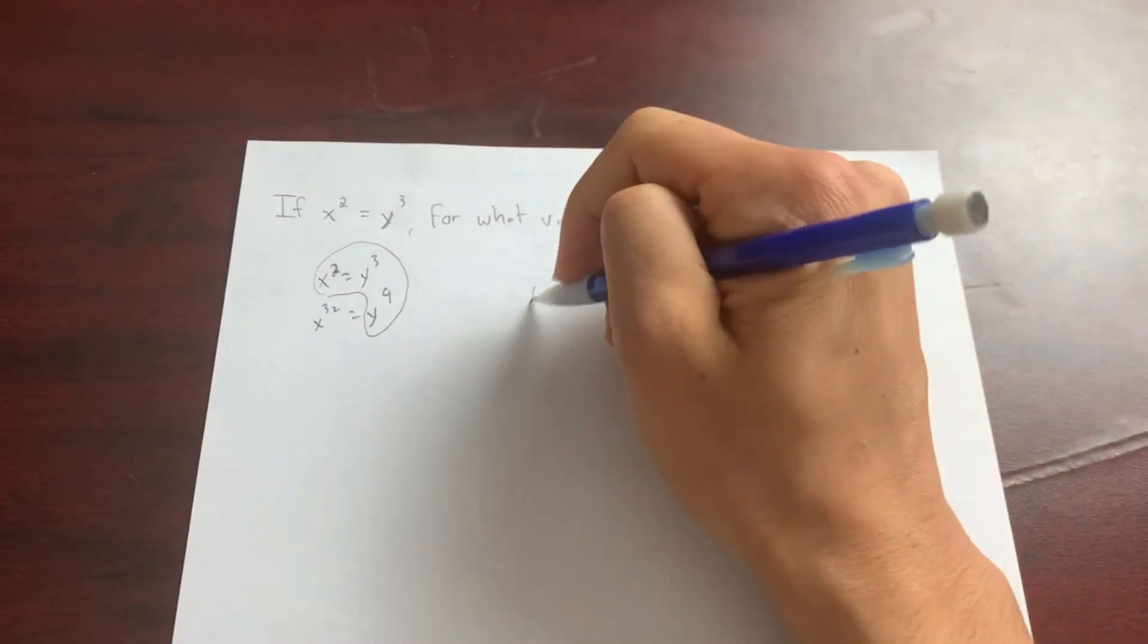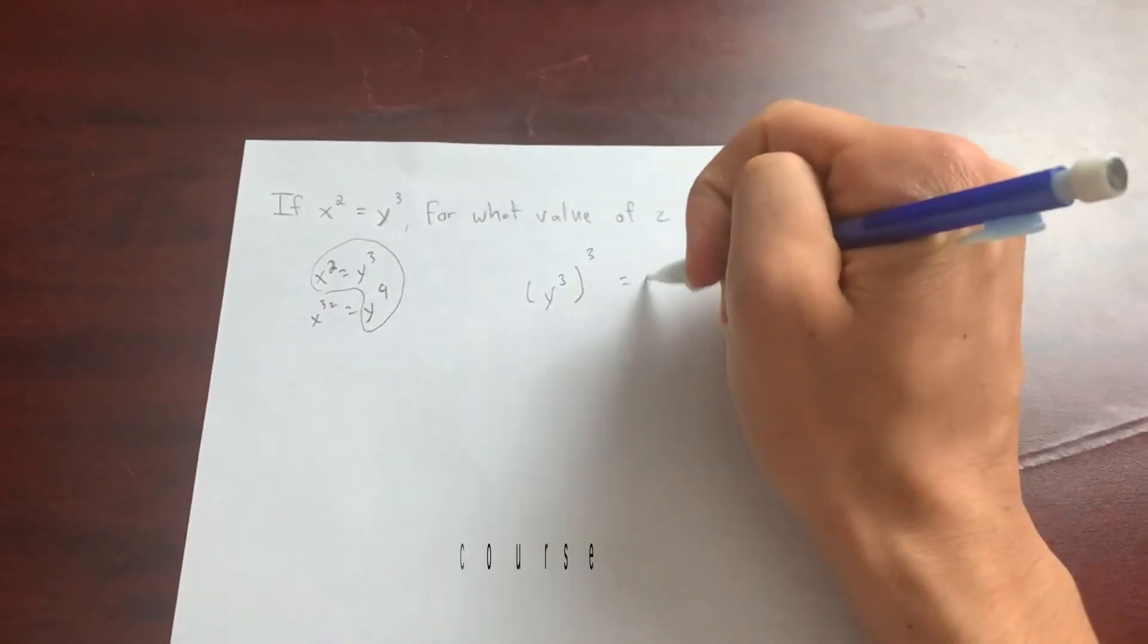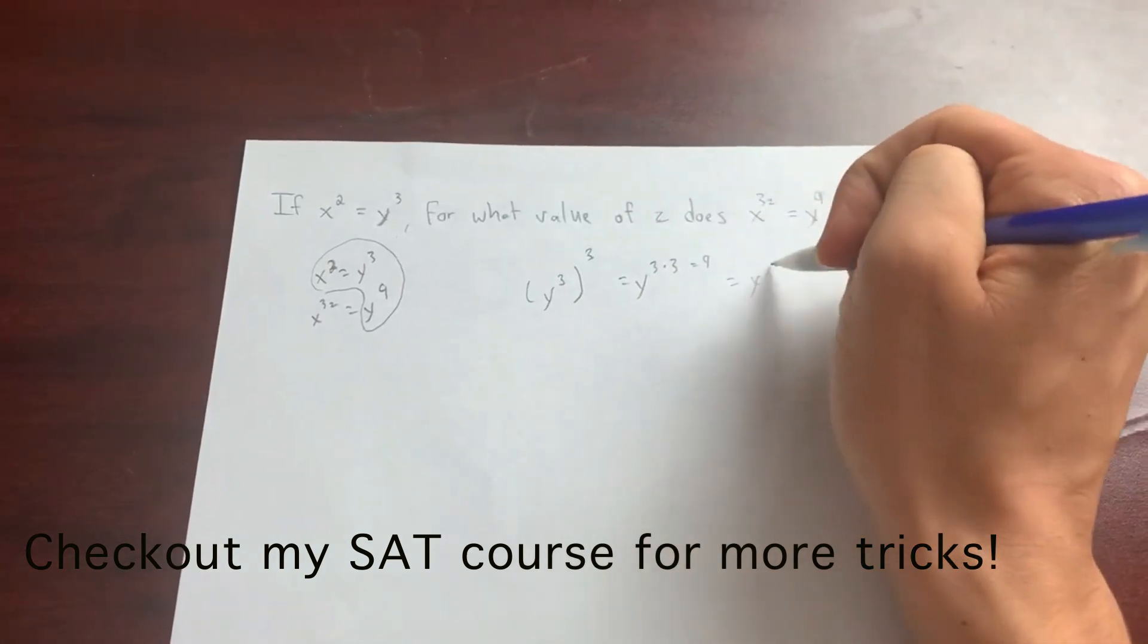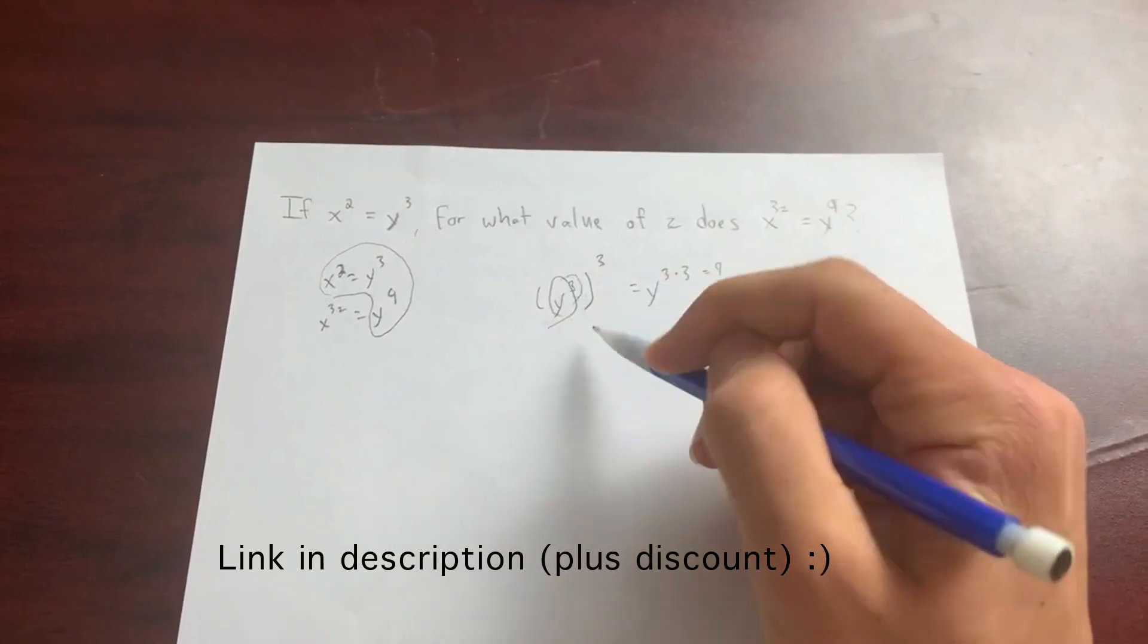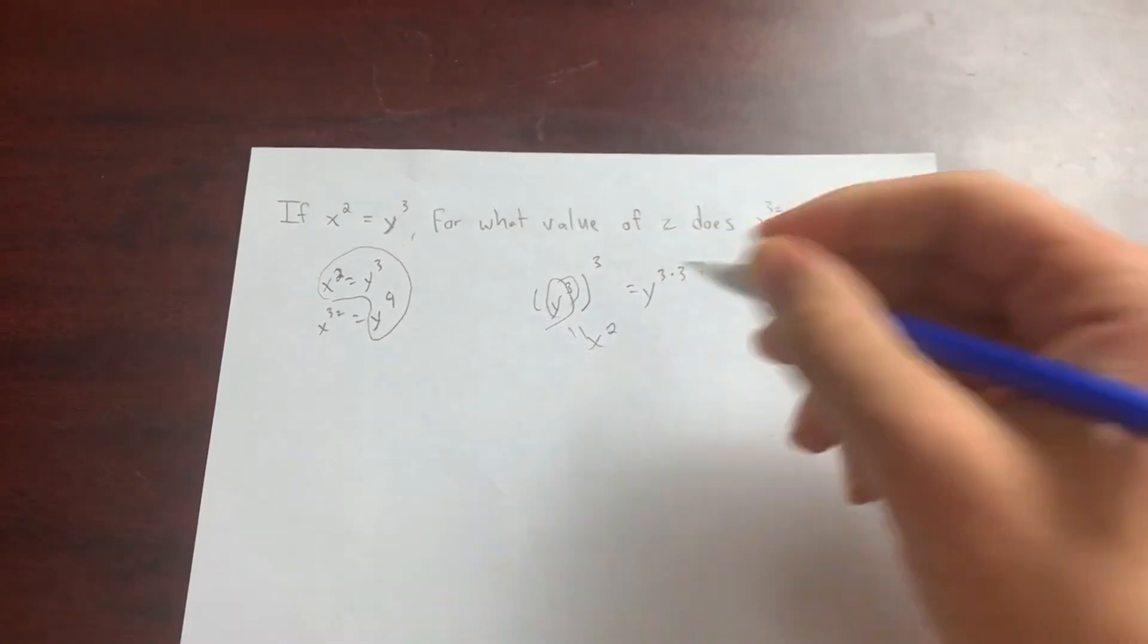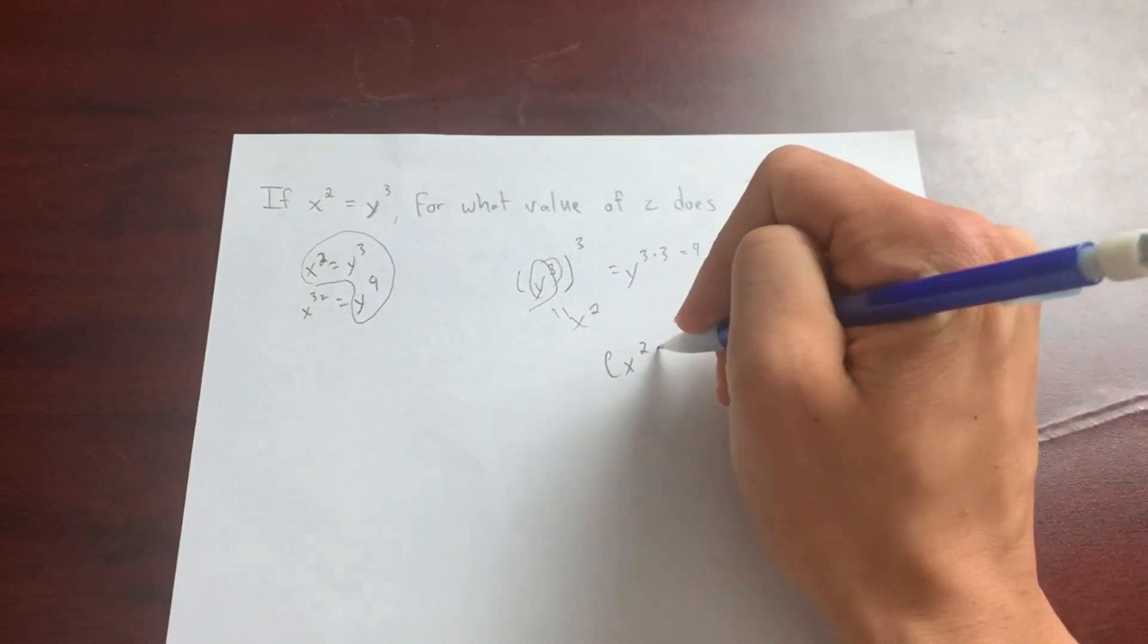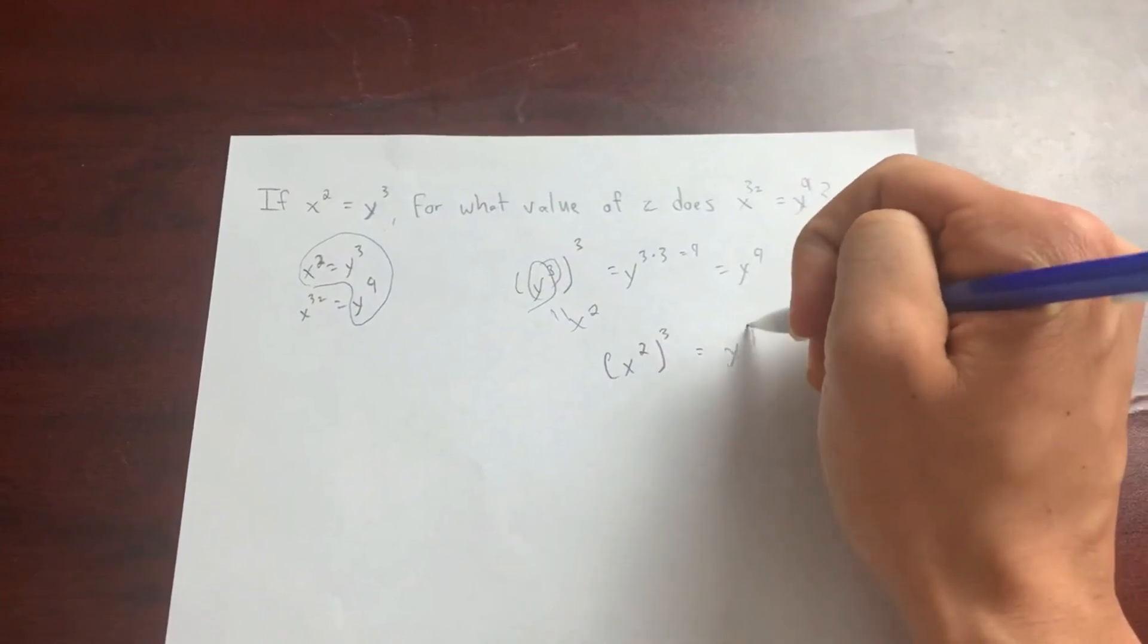I know that a power to a power, so y cubed to the 3 is equal to y to the 3 times 3, equal to y to the 9. I also know that y cubed is equal to x squared. So this means that if I just substitute x squared for y cubed, I get x squared cubed should equal y to the 9.